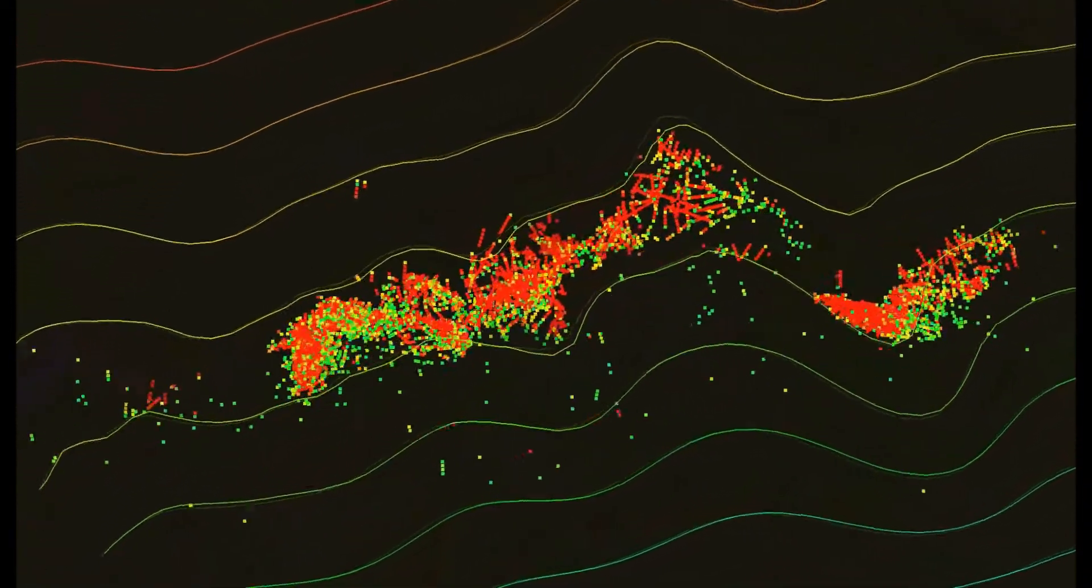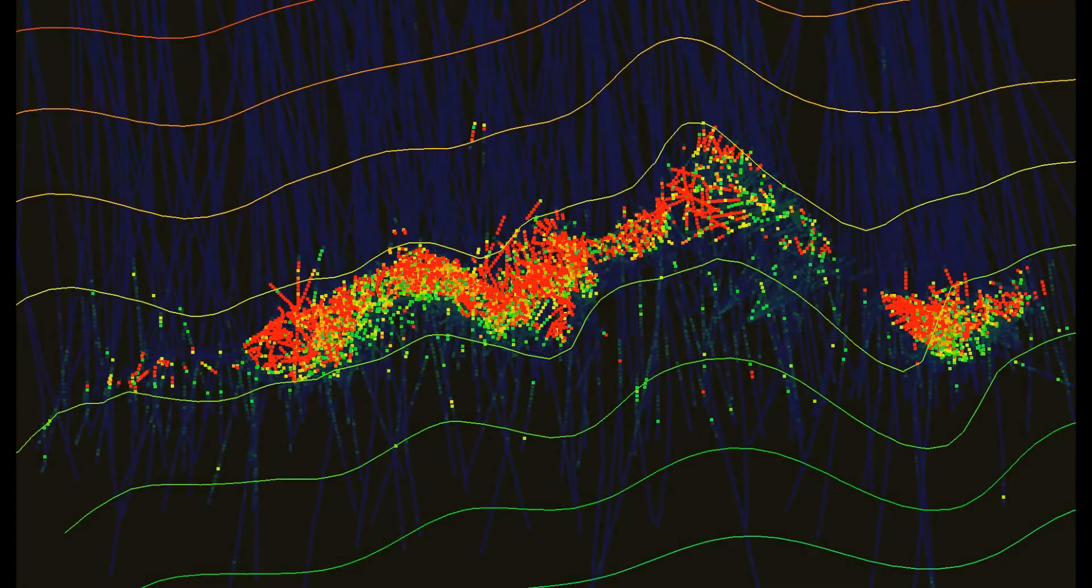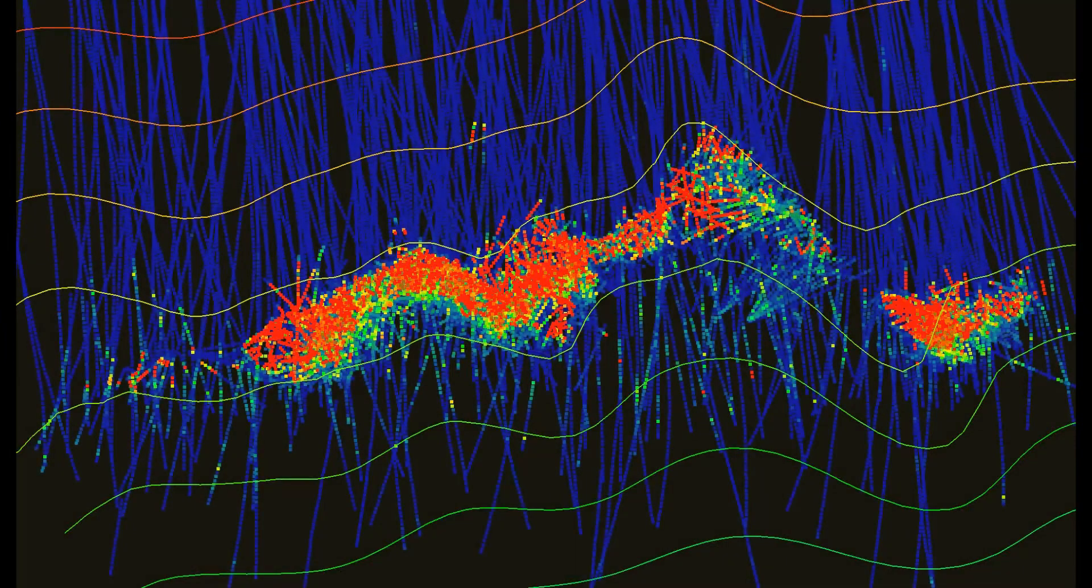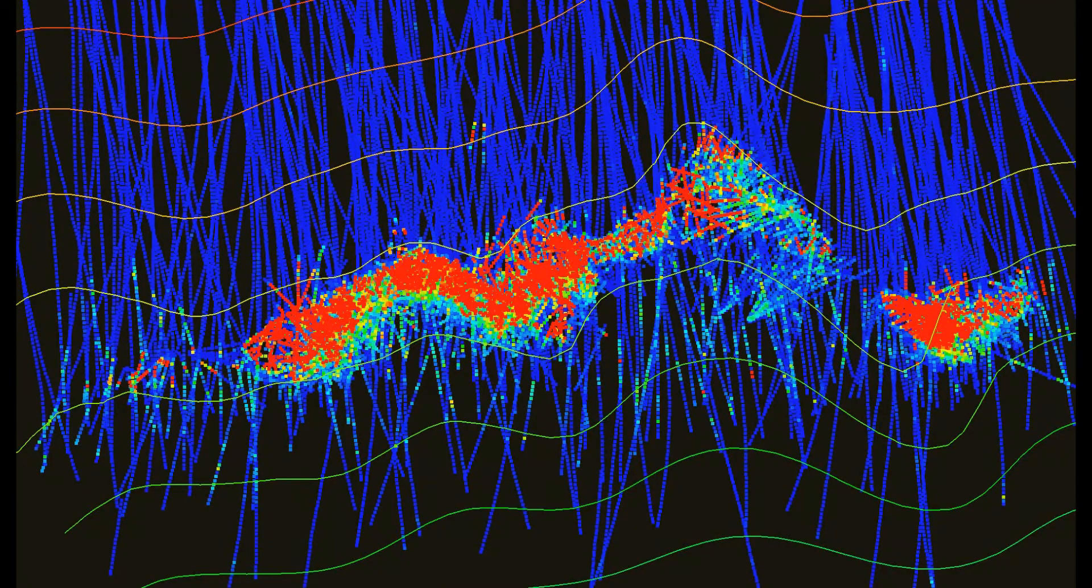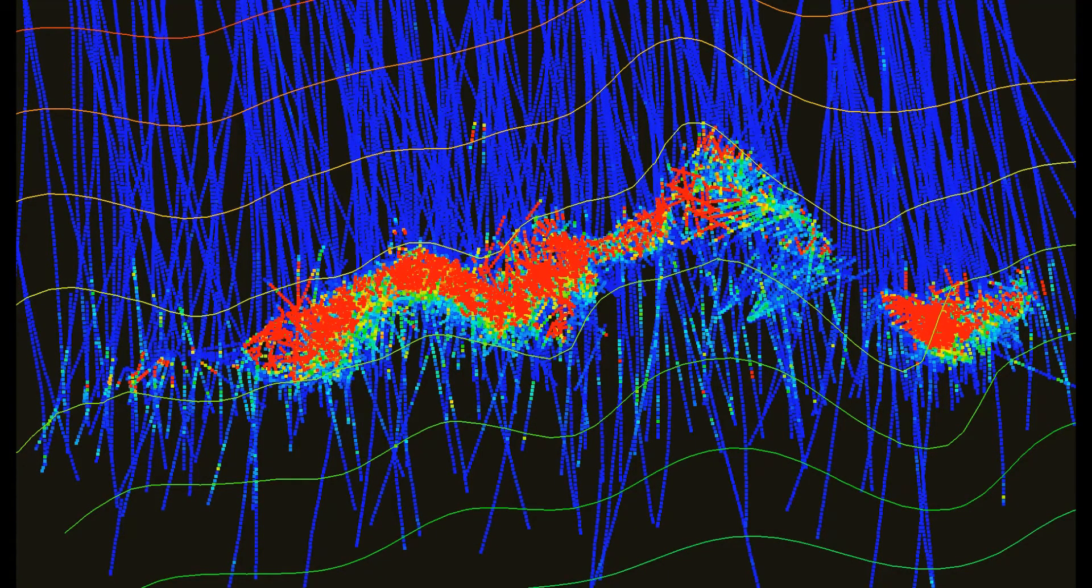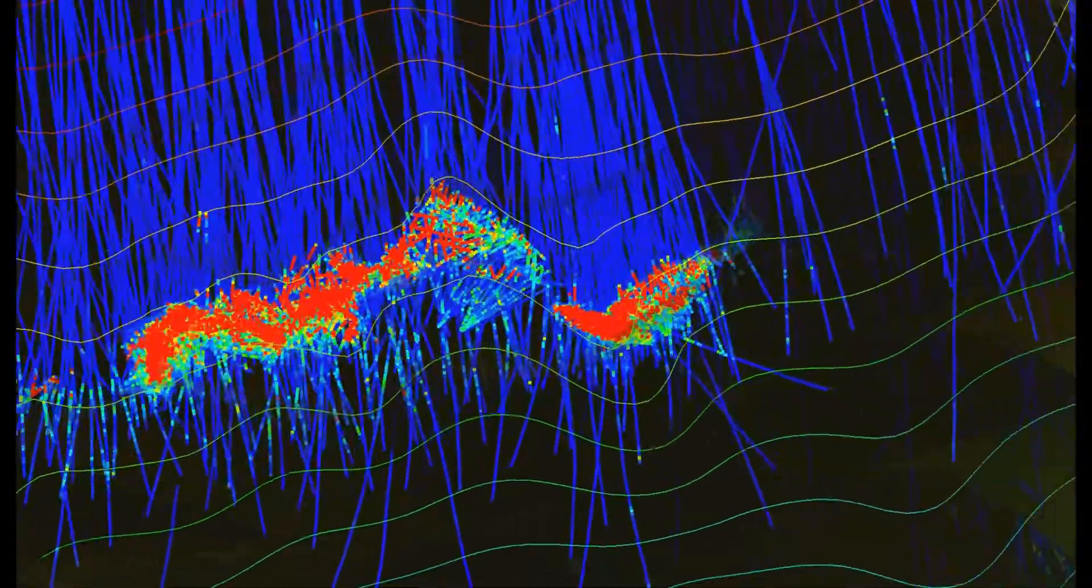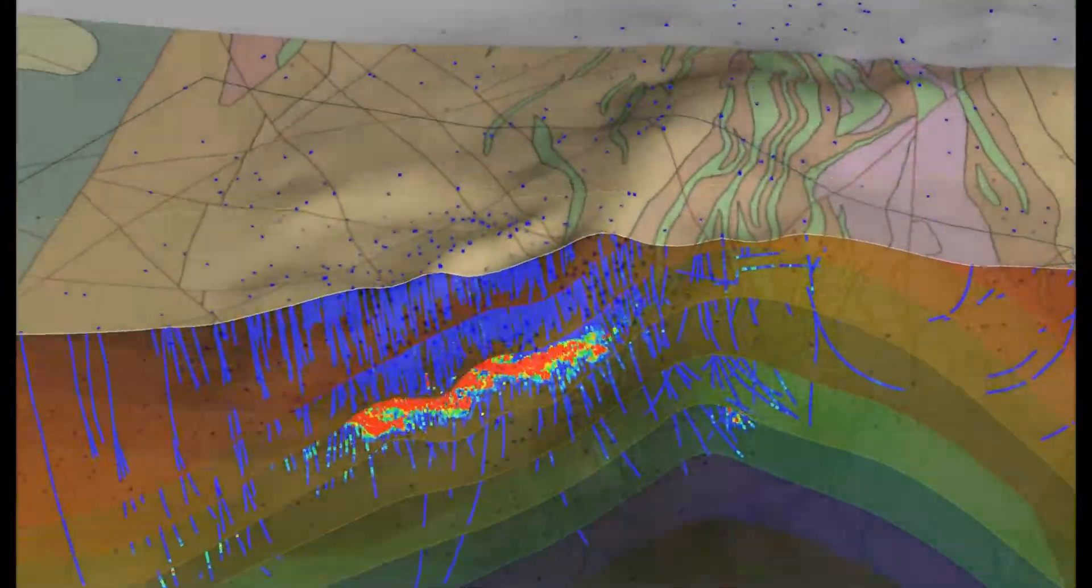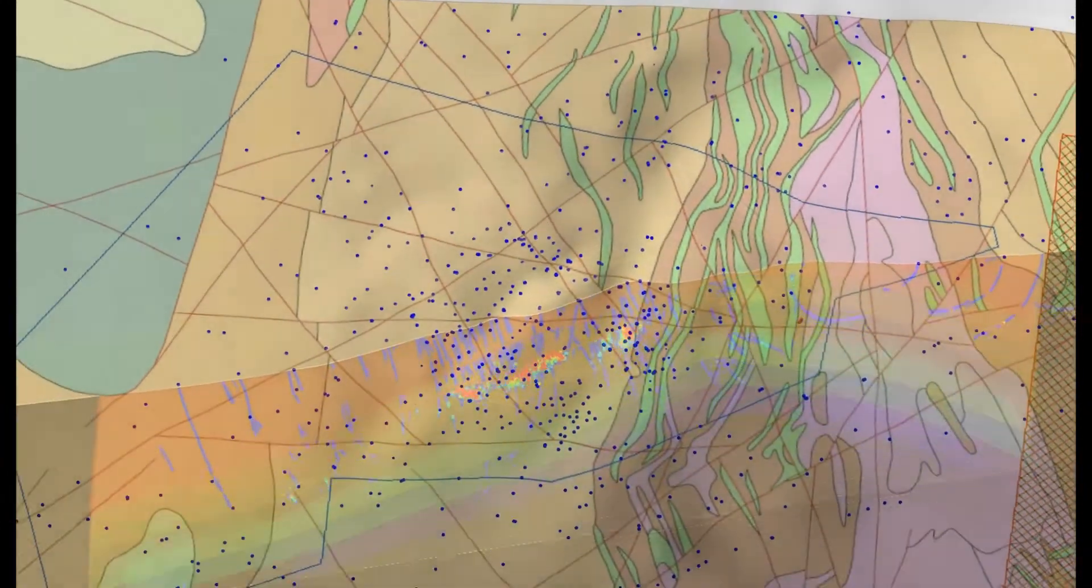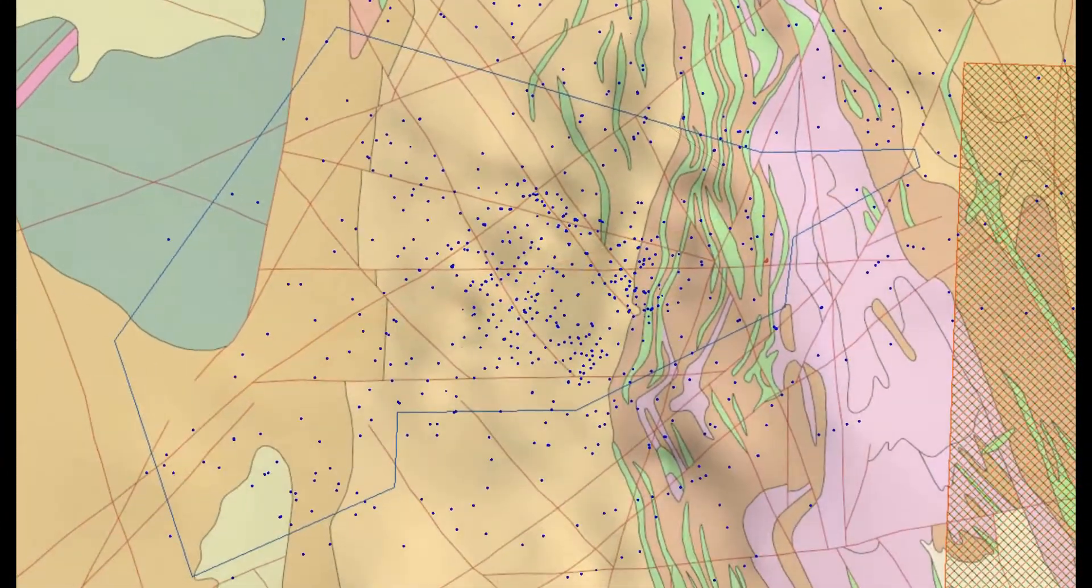We're going to go back looking down plunge now. This is looking down plunge again, zinc values, and then we're going to look at the main plunge of the dome and then go back to the plan view once again.